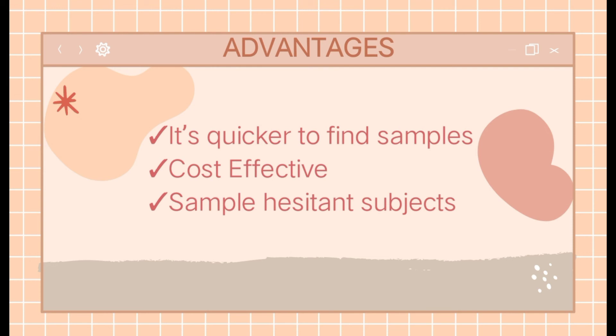Some people do not want to come forward and participate in research studies because they don't want their identity to be exposed. Snowball Sampling makes it possible to sample populations that are otherwise difficult to access. It requires minimal planning and human resources, as the subjects themselves do the outreach.